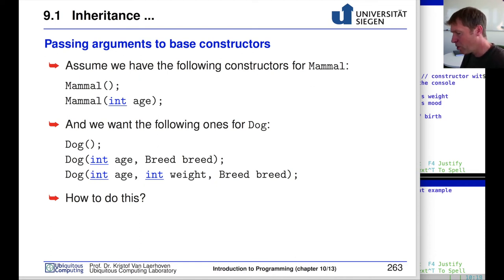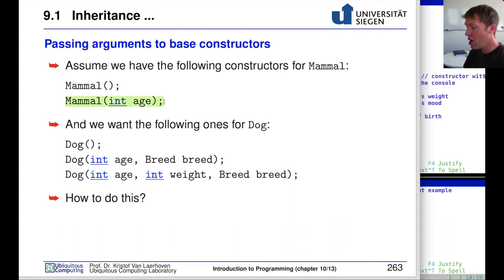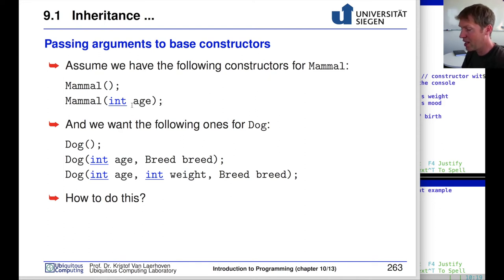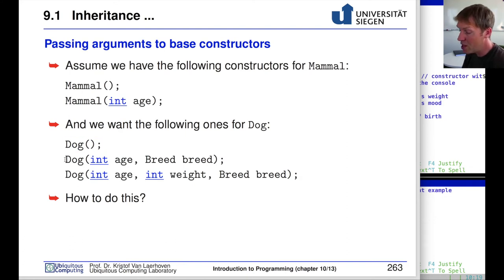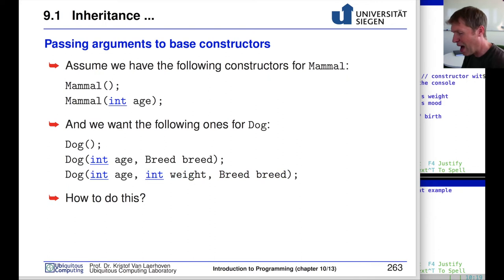Passing arguments to constructors across inheritance levels can be tricky. Assume mammal has a default constructor and a constructor taking one parameter — the age — but no constructor that directly sets the weight. For dog, we want three constructors: a default constructor, one that takes age and breed, and one that takes age, weight, and breed.